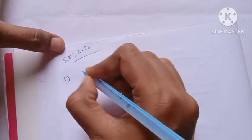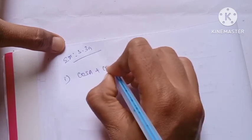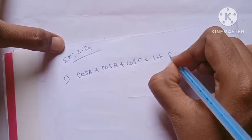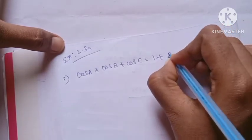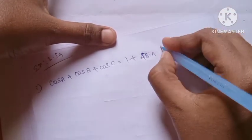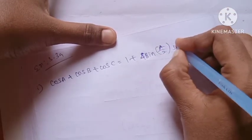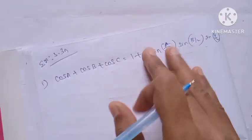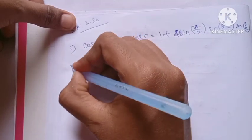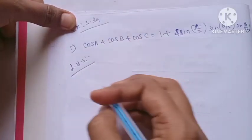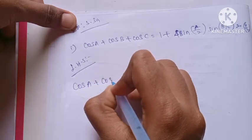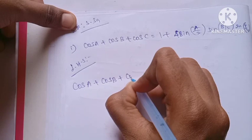Example 3.39. The first question is: cos A plus cos B plus cos C is equal to 1 plus 4 sin(A/2) sin(B/2) sin(C/2). This is the proof. Now we will do the LHS and RHS proof. So, LHS is cos A plus cos B plus cos C.